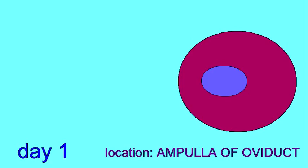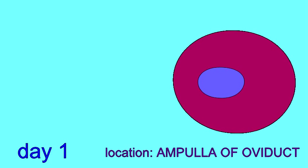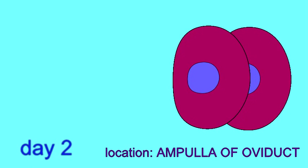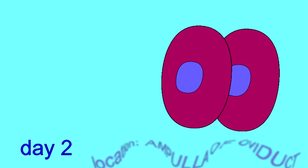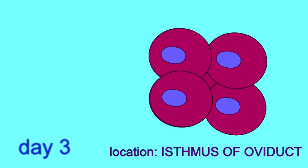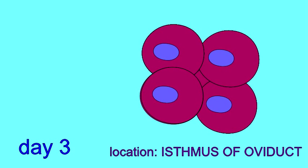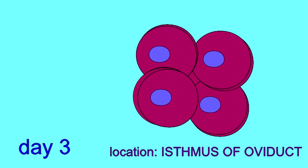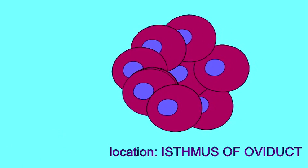Fertilization typically occurs in the ampulla of the oviduct, and it takes about 24 hours the first day for the first cell division to begin. The zygote becomes a two-celled embryo, and by the end of the second day, a four-celled embryo. The cell divisions take less and less time.